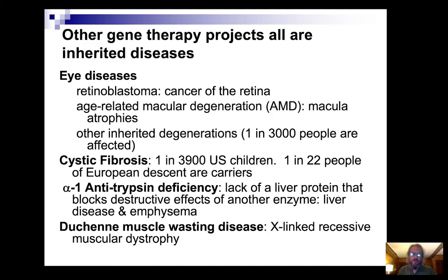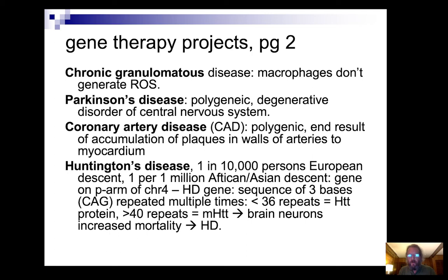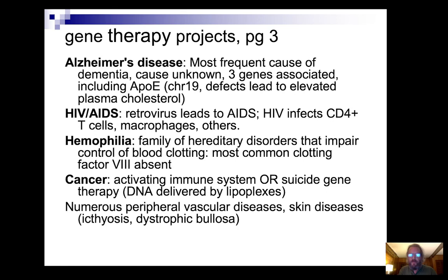There are still a number of gene therapy projects being worked on, trying to fix genetic-based diseases. These range from eye diseases, cystic fibrosis, muscle-wasting disease on the X chromosome, Parkinson's disease, coronary disease, Huntington's, and on and on. Pretty much anything you can think about, people are thinking about gene therapy as an approach.